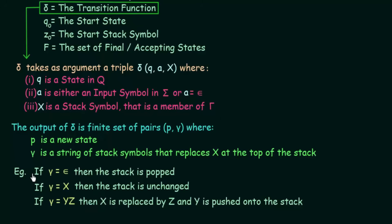Let us see an example to make this clearer. If gamma equals epsilon, it means the stack is popped. The transition function del took arguments Q, A, and X and gave output P and gamma. If gamma happens to be epsilon, the stack is popped — meaning the element is removed. Epsilon means empty, so gamma equal to epsilon means the element in the stack was removed and the stack is empty.